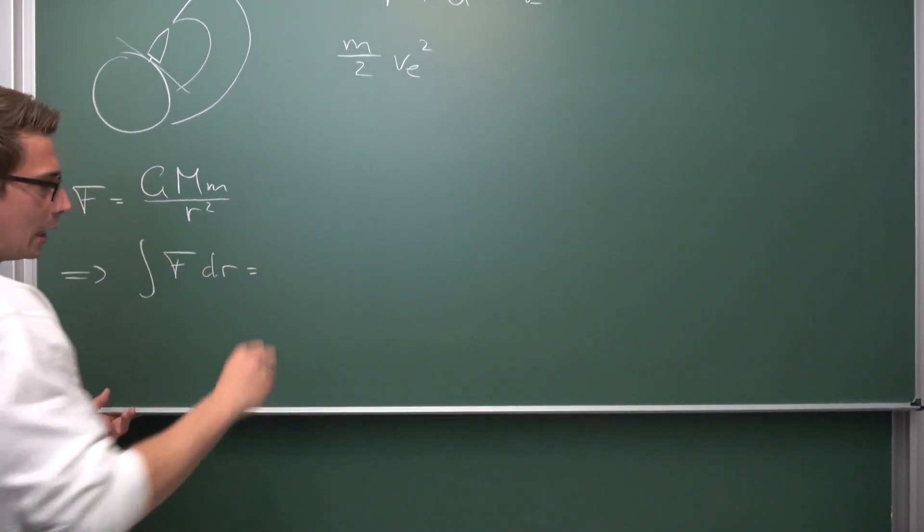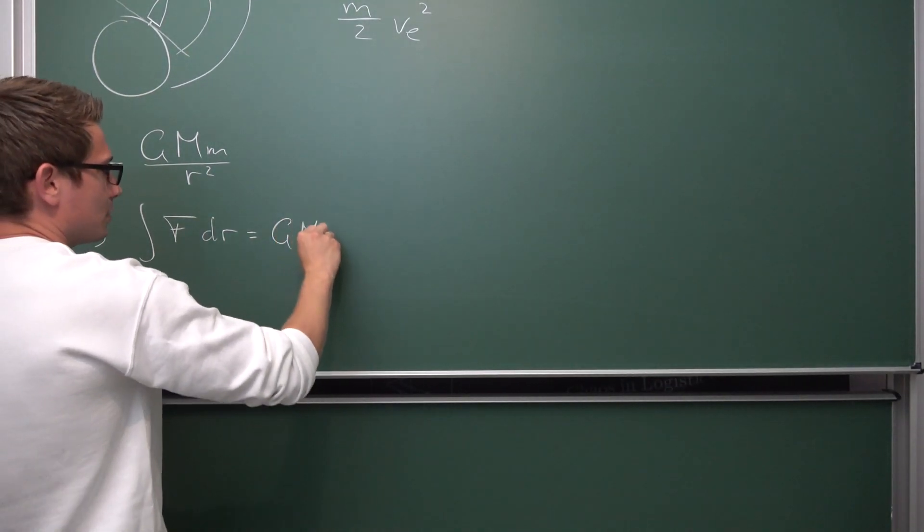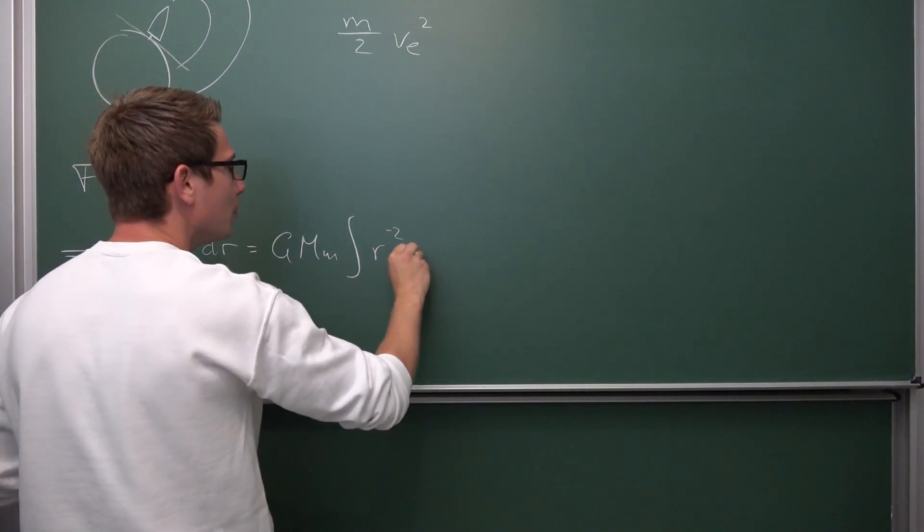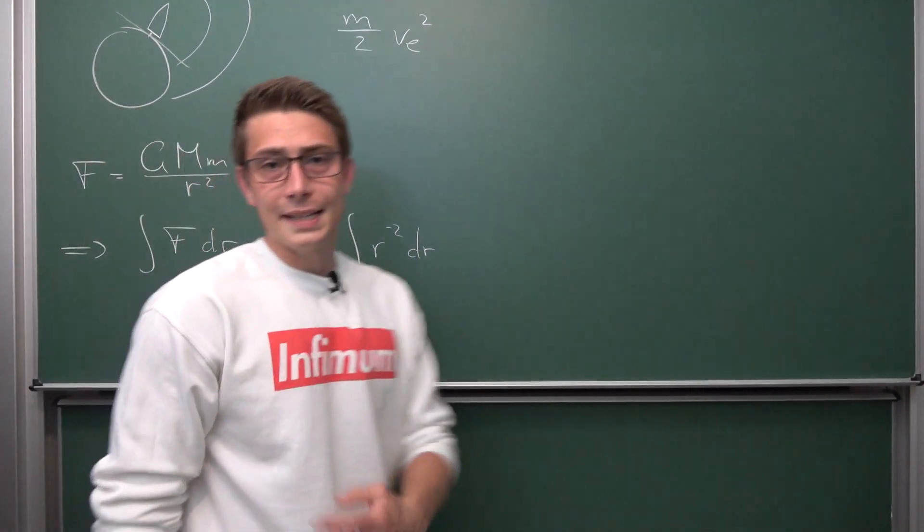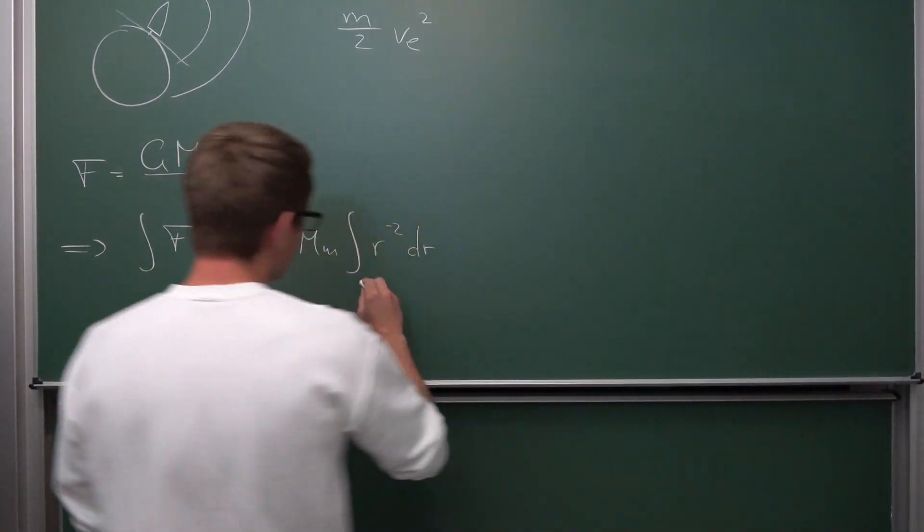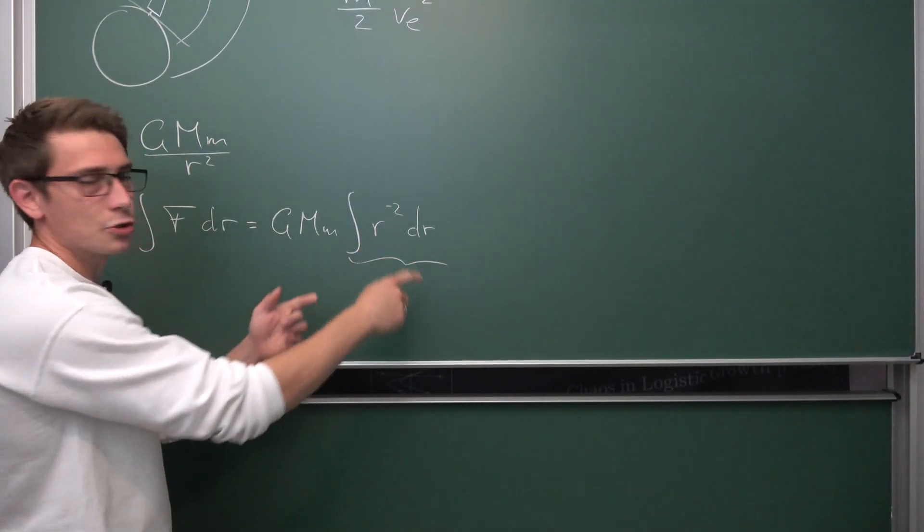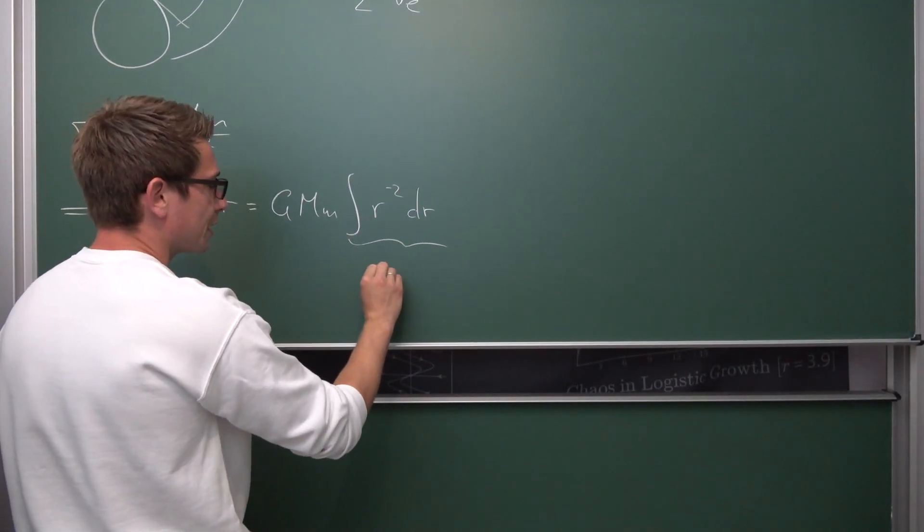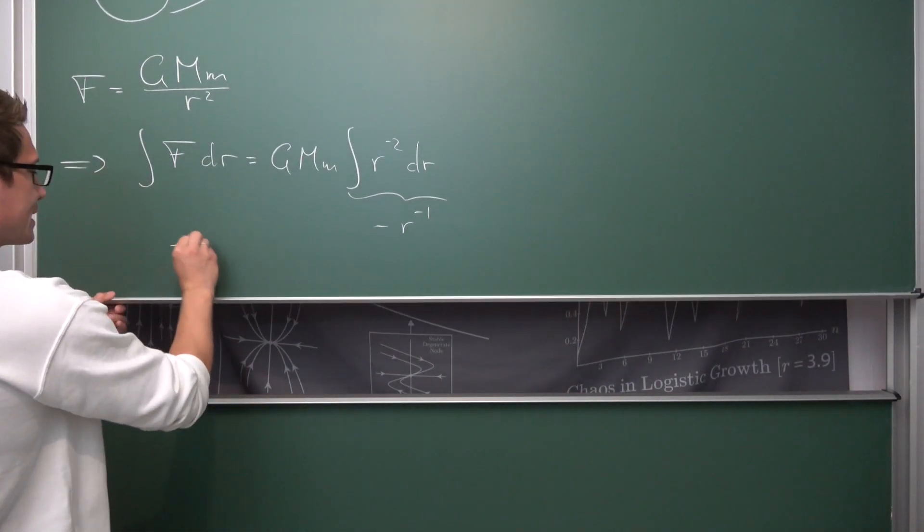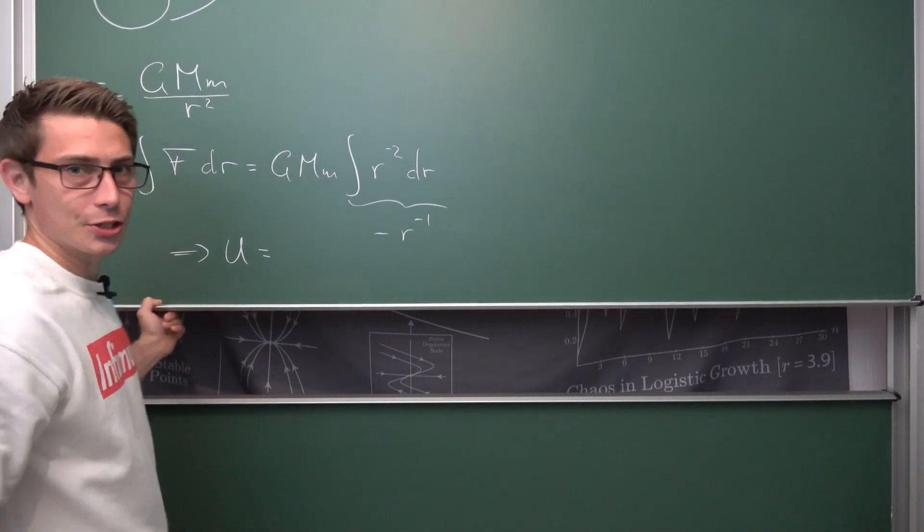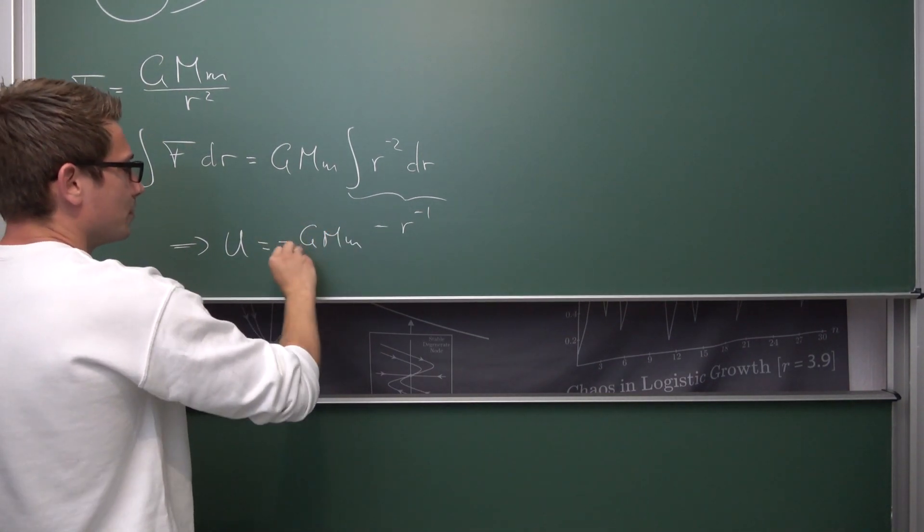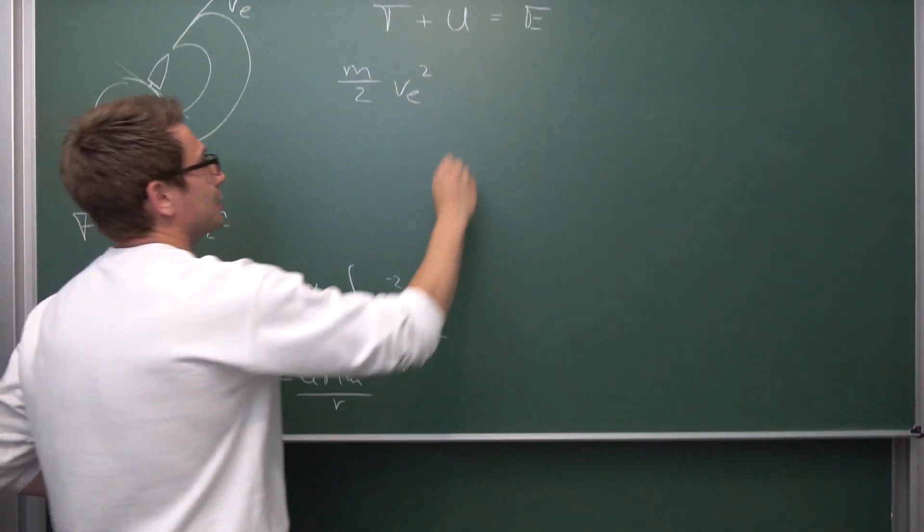G times M times M times the integral of 1 over R squared is R to the negative 2th power. And integrating this right here is fairly easy. We are just going to raise the exponent by 1. And also we need to track the negative sign to the front. Giving us negative R to the negative 1th power. Or in other words we can say that our gravitational potential, the generalized one, is going to be negative G times M times M divided by R. And yeah, this is basically it.